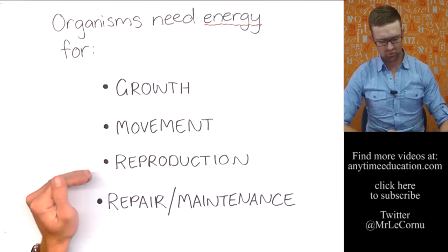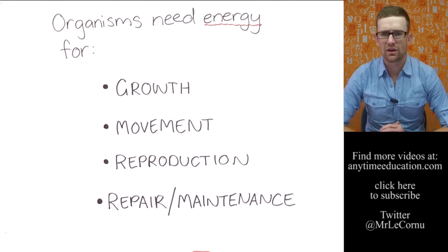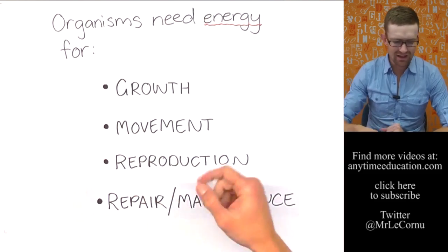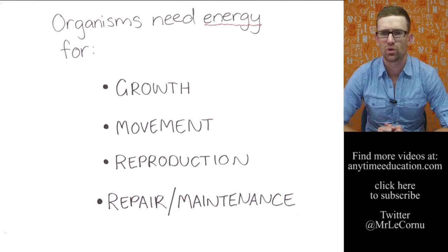They're probably the four major headings that we could use to describe what living things or organisms need energy for: growth, movement, reproduction, repair and maintenance. Think of any living thing, and you'll be able to say that, yes, they need to be able to do those four things.